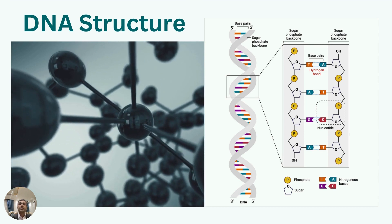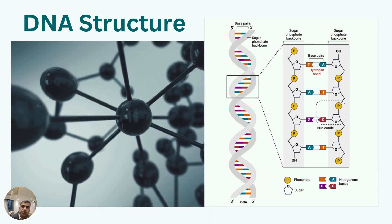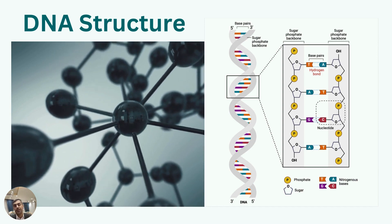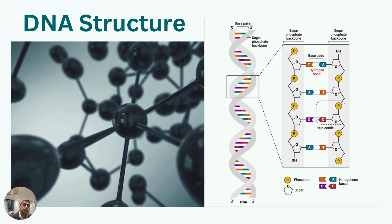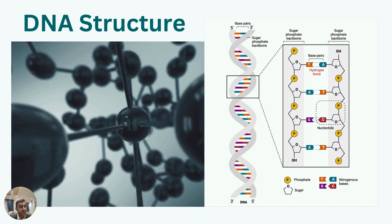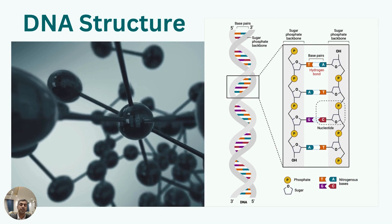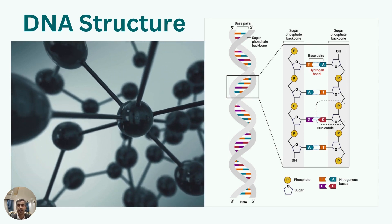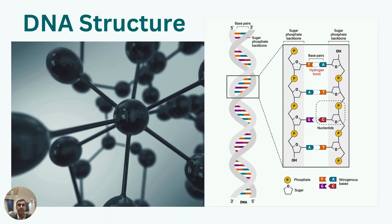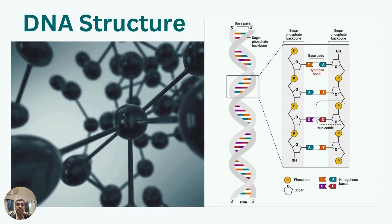Another feature of our DNA is that it contains four different types of nitrogen bases: adenine, thymine, guanine, and cytosine. In one strand, adenine binds with thymine by two hydrogen bonds, whereas cytosine in the first strand binds with guanine by three hydrogen bonds in the second strand. These two strands of DNA are complementary and can serve as templates for each other during DNA replication.